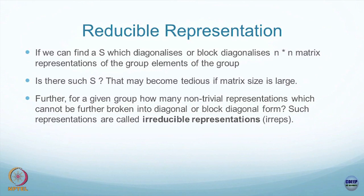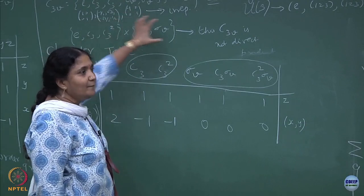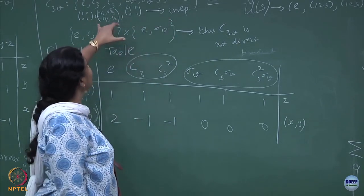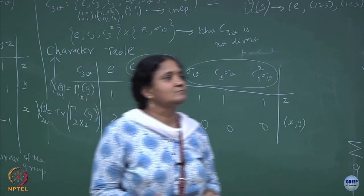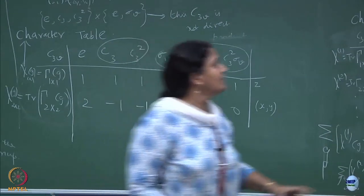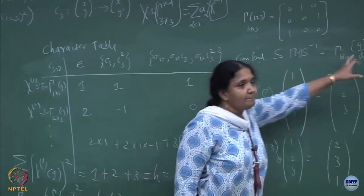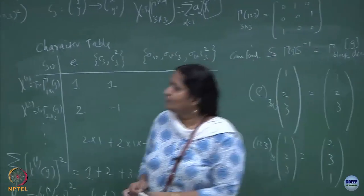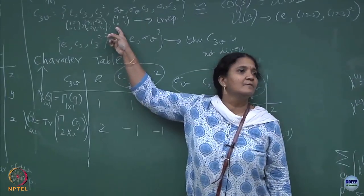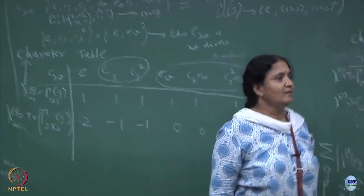Suppose you cannot break it up — that is what I am saying. If you have an n×n matrix and you cannot break it up, then that matrix is an irreducible representation. This 2×2 cannot be further broken down into 1×1 simultaneously by a similarity transformation — these things are called irreps. Given a representation, if you can find an S to break it up, you call it a reducible representation; if you cannot find such an S, you call it an irreducible representation.